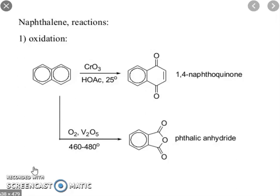You can see that in the presence of chromium oxide and acetic acid at 25 degrees Celsius, naphthalene undergoes oxidation and forms 1,4-naphthoquinone.